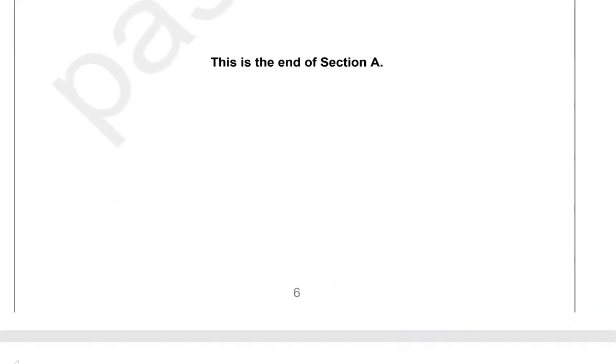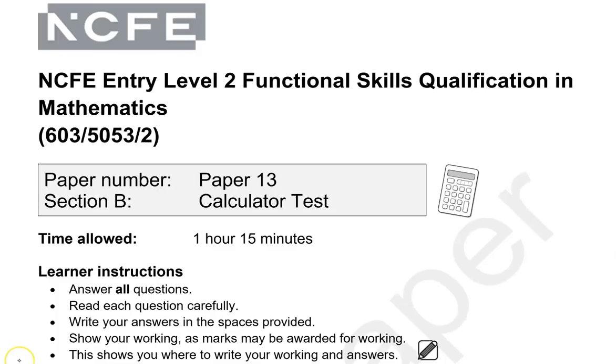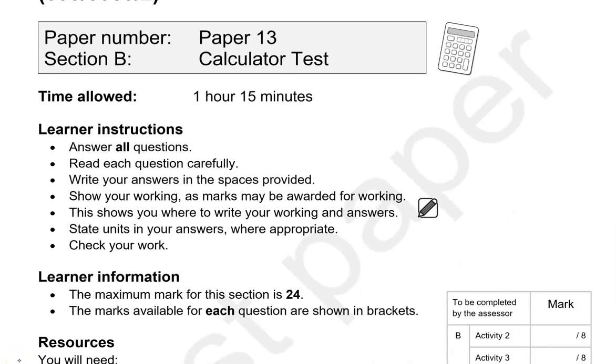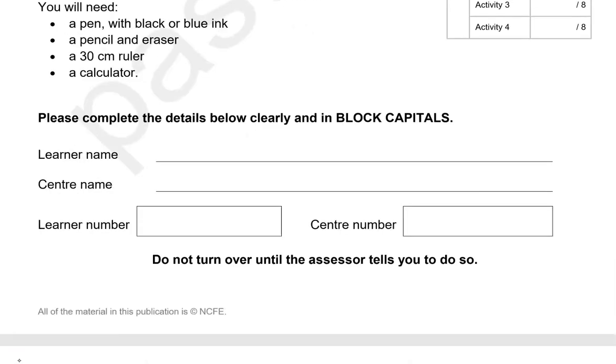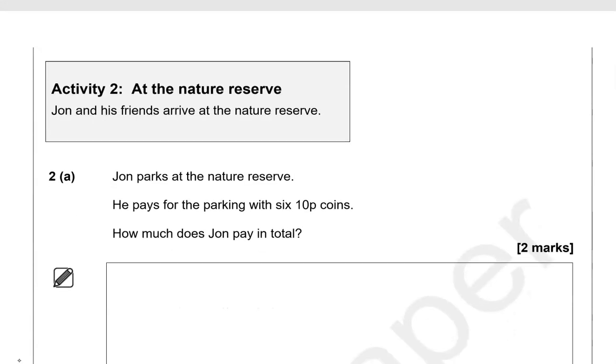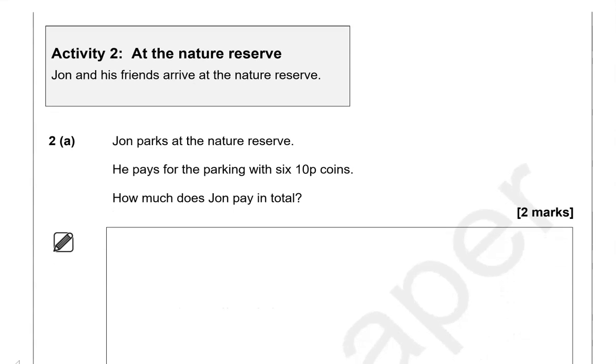This is the end of the first part. This is now the second part of the paper, where you can use a calculator. Activity two, at the nature reserve. John and his friends arrive at the nature reserve. John parks at the nature reserve. He pays for the parking with six 10p coins. How much does John pay in total?